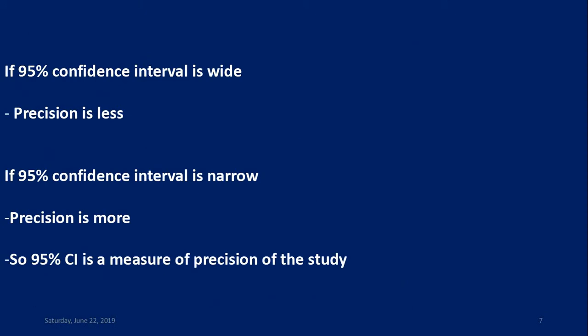If the 95% confidence interval is wide, the precision of the study is less. If the 95% confidence interval is narrow, the precision of the study is more. So the 95% confidence interval is a measure of precision of the study.